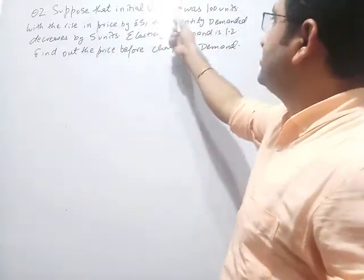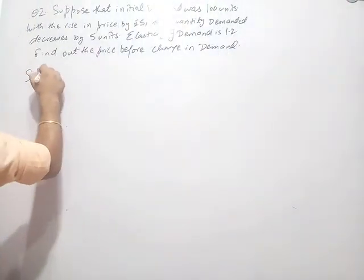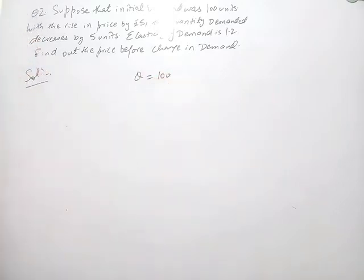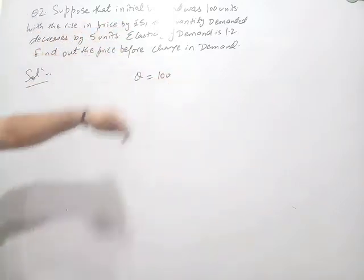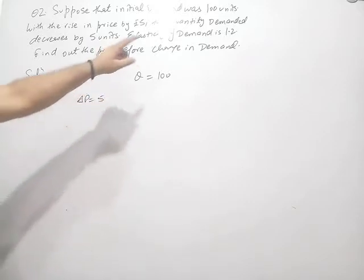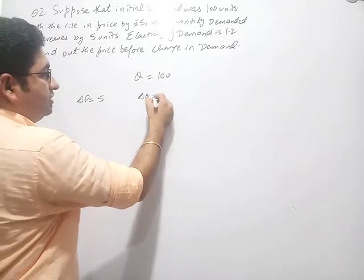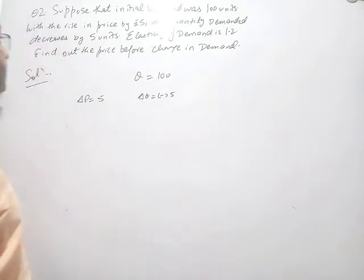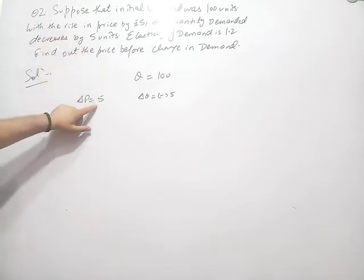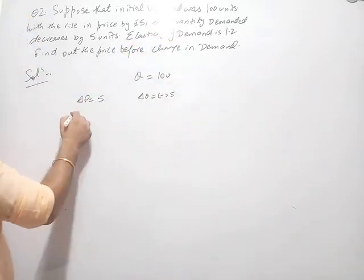The next question: suppose that initial demand was 100 units, so Q is equal to 100. With a rise in price by Rs. 5, it means change in P is 5. The quantity demanded decreases by 5 units, so change in Q is minus 5 — it is decreasing while price is rising, that is why it is negative. Elasticity of demand is 1.2. Find out the price before change in demand.